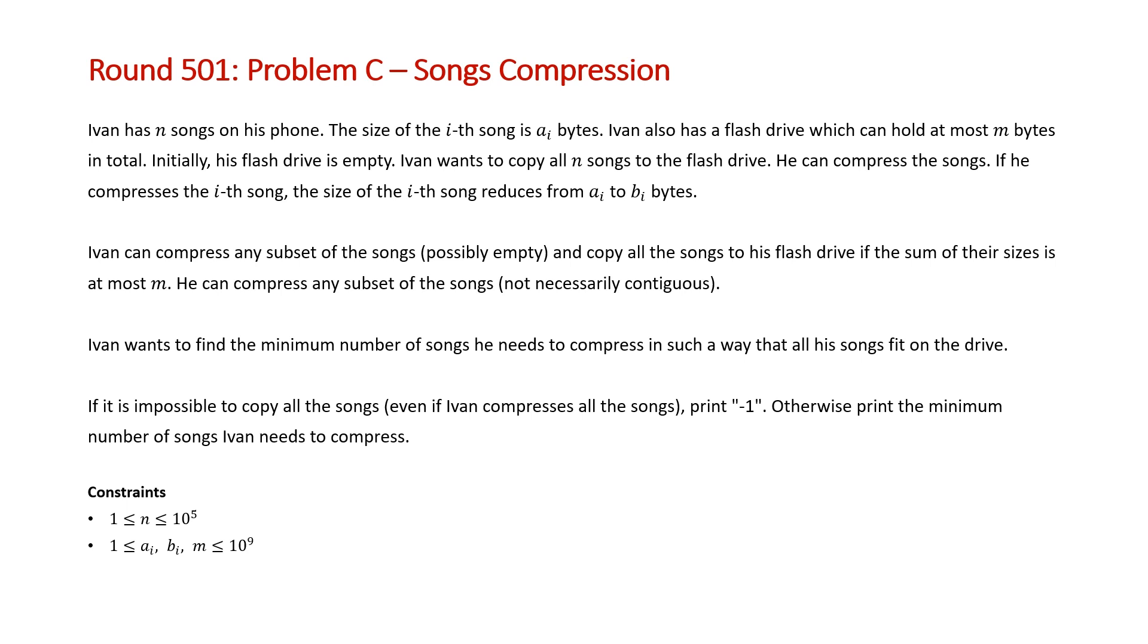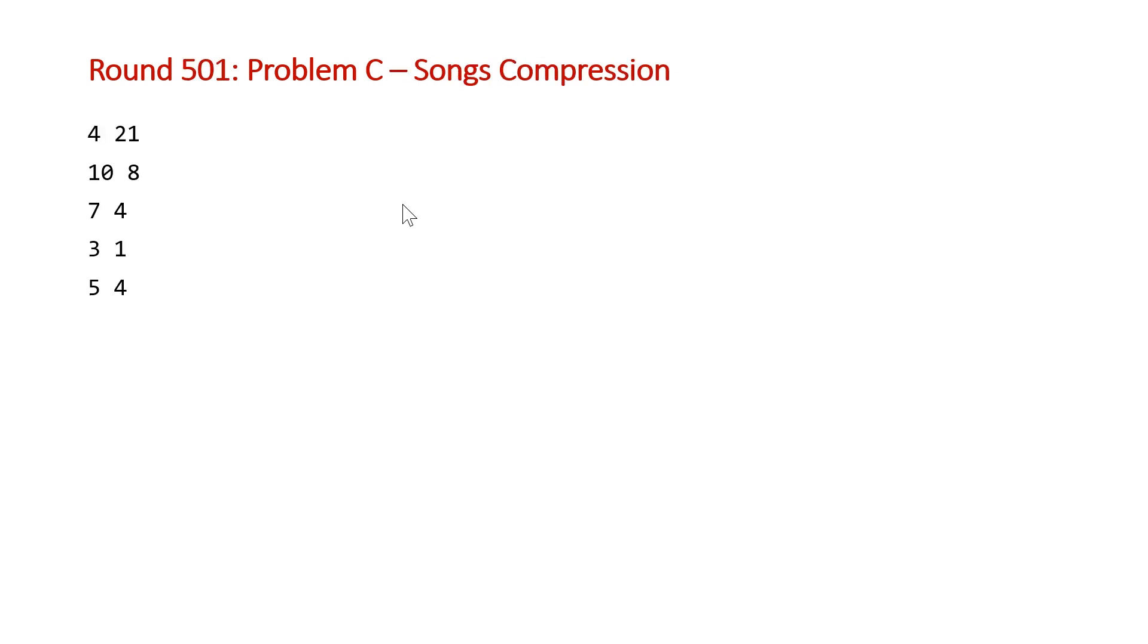Let's take a look at one of the examples that Code Forces provided us with. On our first line, we have N and M, the number of songs and the number of bytes our flash drive can store respectively. And the next N lines give us the values for A and B for each of our songs.